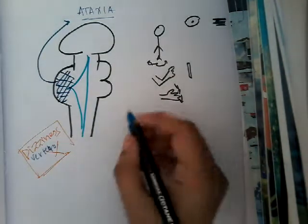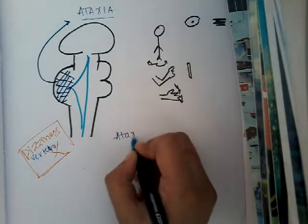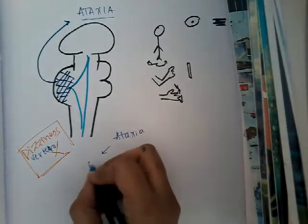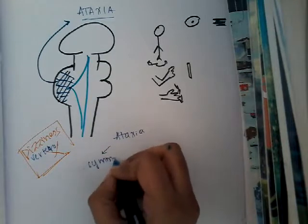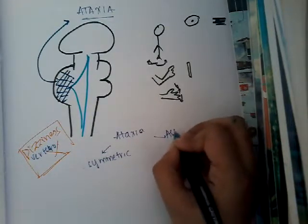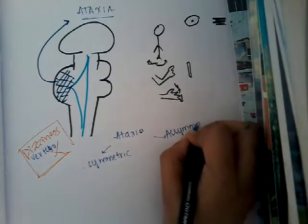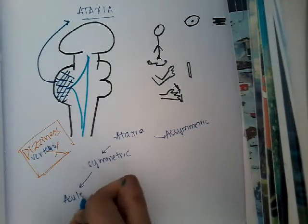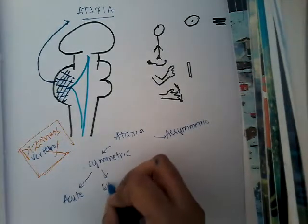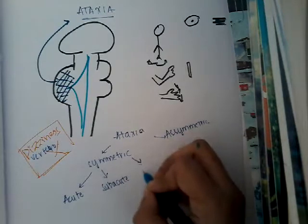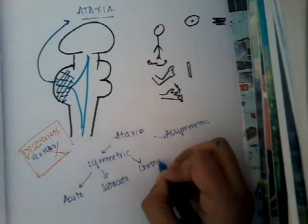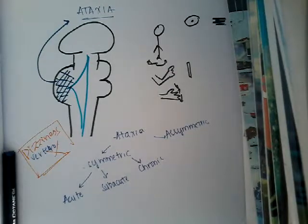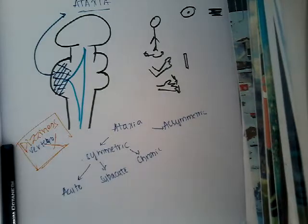The causes of Cerebellar Disease or ataxia can be divided into symmetric or asymmetric. In symmetric, it can be divided into acute — which occurs in hours to days — or subacute, or chronic. Acute occurs within hours to days. For example, if there is an acute viral infection, that can cause symmetric ataxia.